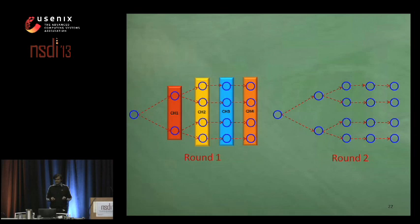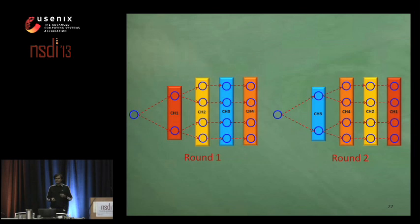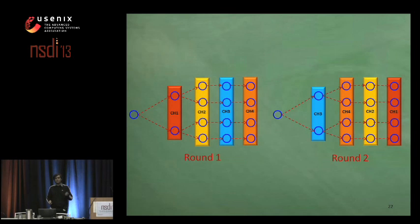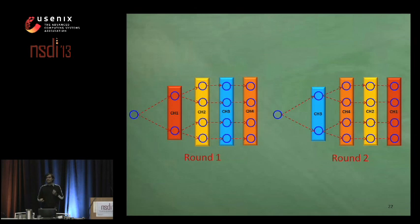The channel assignment used in one round is different from that used in another round. For example, channel one is used in round one at the first-hop nodes, whereas it is used for the last hop in the second round. This way, we exploit the fact that different channels behave differently in different parts of a network.